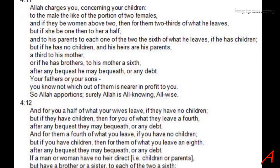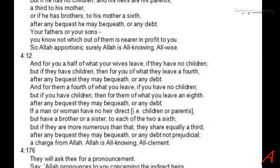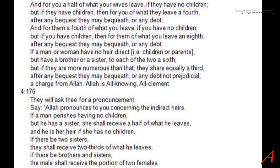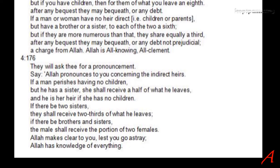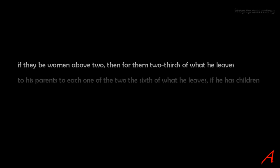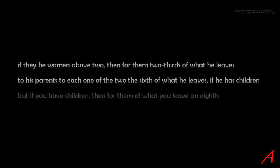You have verse 4:11, 4:12, then a whole other set of sentences, and then somehow an addition at the end of chapter 4. So, selecting the three sentences applicable to this basic example: if women are above two — yes, there are three daughters here — then for them two-thirds of what he leaves. His parents, one of each, each one of the two gets a sixth of what he leaves, if he has children — and yes, there are three daughters, so this applies. And for the wife, if he has children, then for her an eighth of what he leaves. Since there is only a single wife, only one-eighth of the estate is attributed to her.